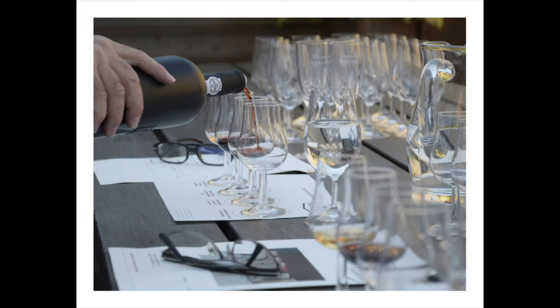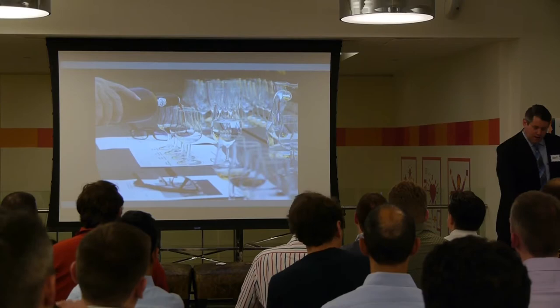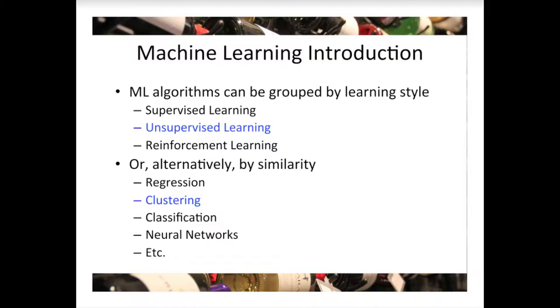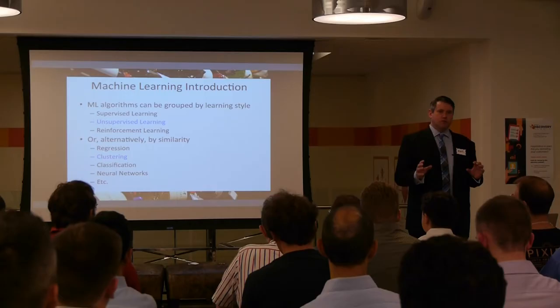This is a picture that gets you thinking about how wine tastes and how wine looks. The topic is: how do we teach the machine to appreciate wine? I'm being a little bit sarcastic — I really want to use KDB and some machine learning techniques to differentiate wine, one wine from another.